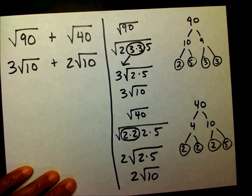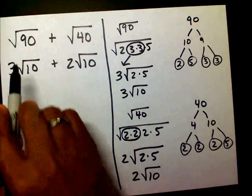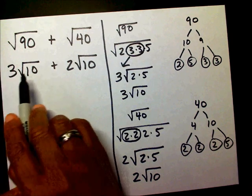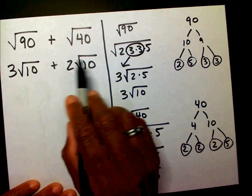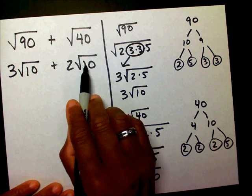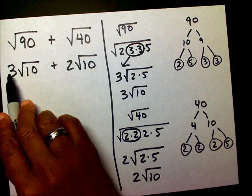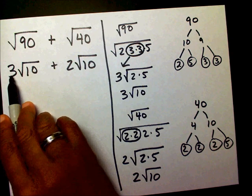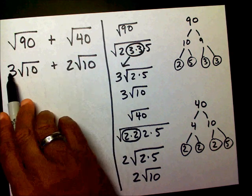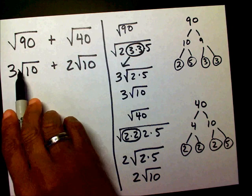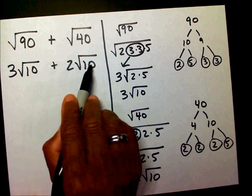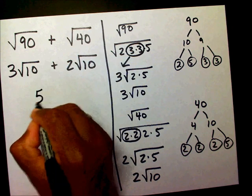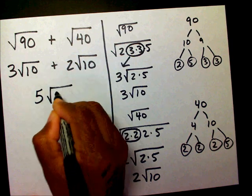So up here I write 2 radical 10. Now that I have the same radicands — my radicand is 10 here and my radicand is 10 here — I'm going to add my radicals. Three radical tens plus two radical tens leaves me with five radical tens. And here's my final answer.